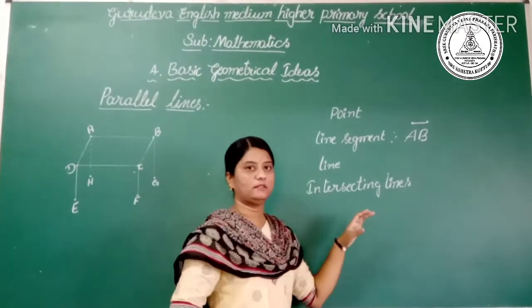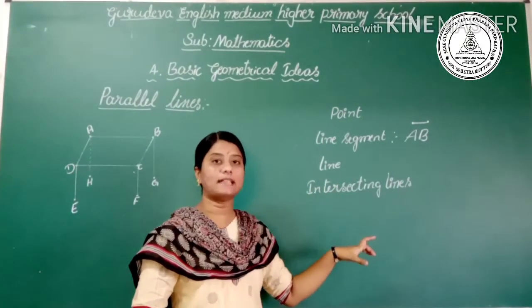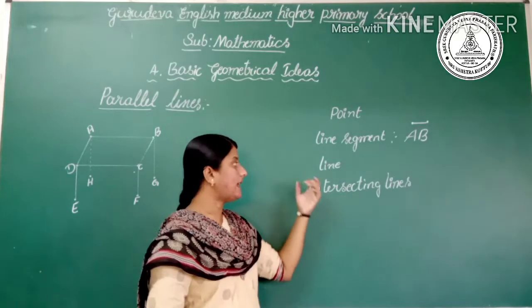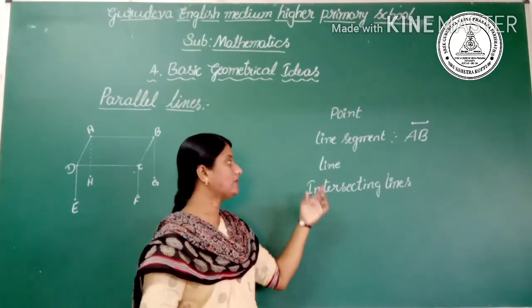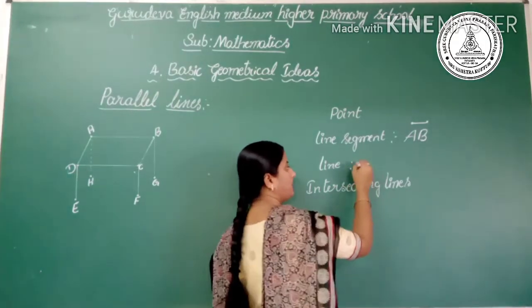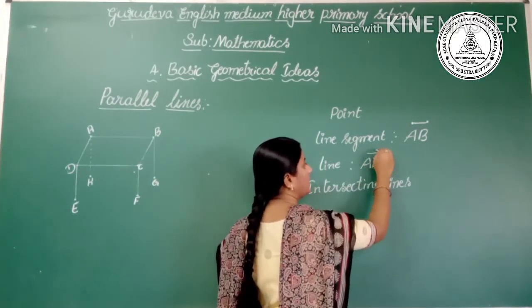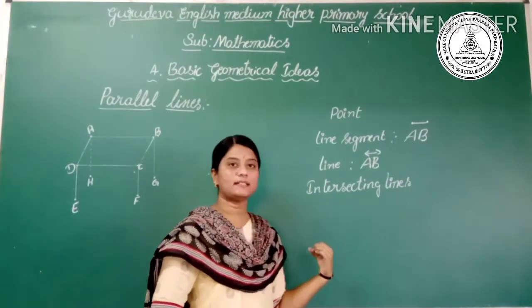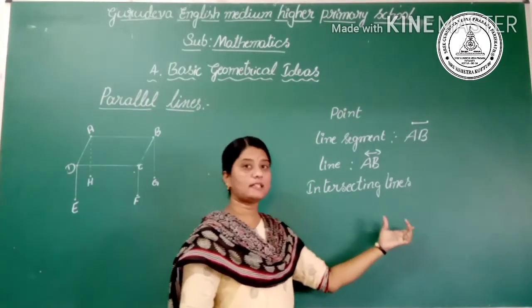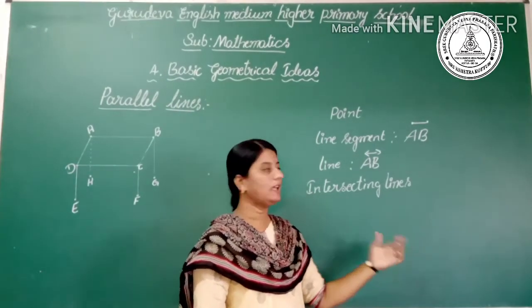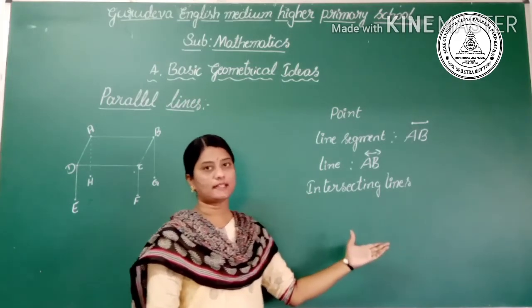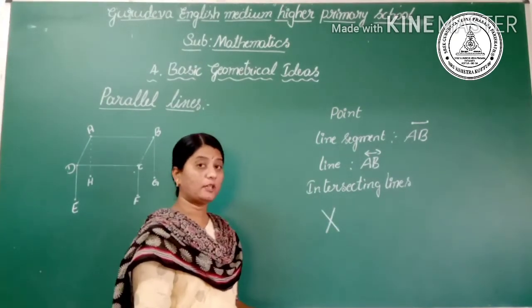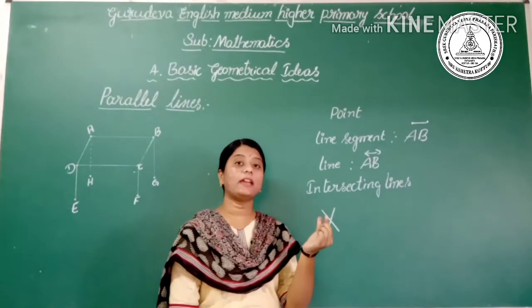And similarly, the line. A line segment which extends in both directions infinitely is called a line. For example, a line can be shown with arrows in both directions. The next is intersecting lines. Two lines which intersect at a common point are called intersecting lines. For example, the capital letter X, road crossings, and the two edges of a choppy box.